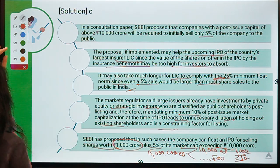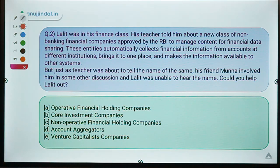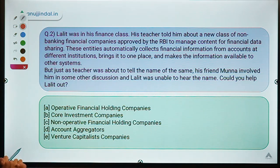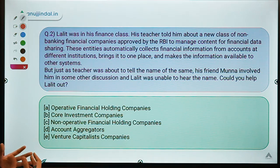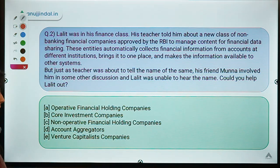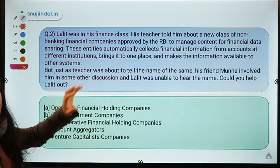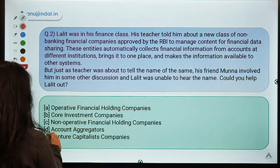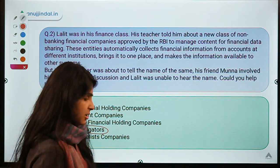Moving ahead to the next question. This question says: Lalith was in his finance class when his teacher told him about a new class of bank NBFCs approved by RBI to manage content for financial data sharing. These entities automatically collect information from accounts at different institutions, bring it to one place, and make it available to other systems. Lalith missed the name — could you help him? The correct option is option D, which means Account Aggregators.